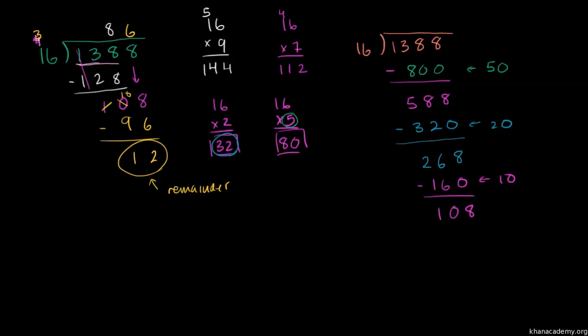And we can go back to our, we know 16 times 5 is 80. So let's just try out 5. So let's just try 5. 16 times 5 is 80. We subtract right over here. 8 minus 0 is 8, 10 minus 8 is 2. So we're left with 28.